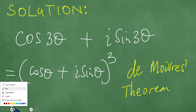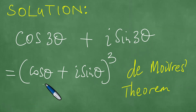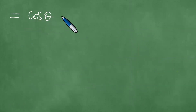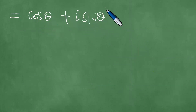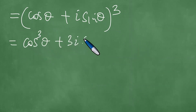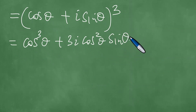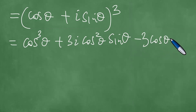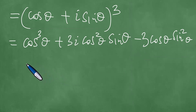Let's proceed with the actual solution. We perform a binomial expansion, so this equals (cosθ + i·sinθ)³. This expands to cos³θ + 3i·cos²θ·sinθ, and by using the binomial theorem this also gives minus 3·cosθ·sin²θ, and here we have minus i·sin³θ.